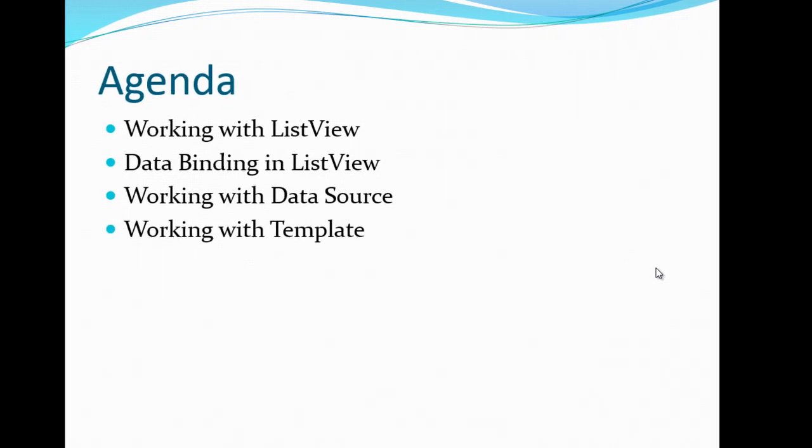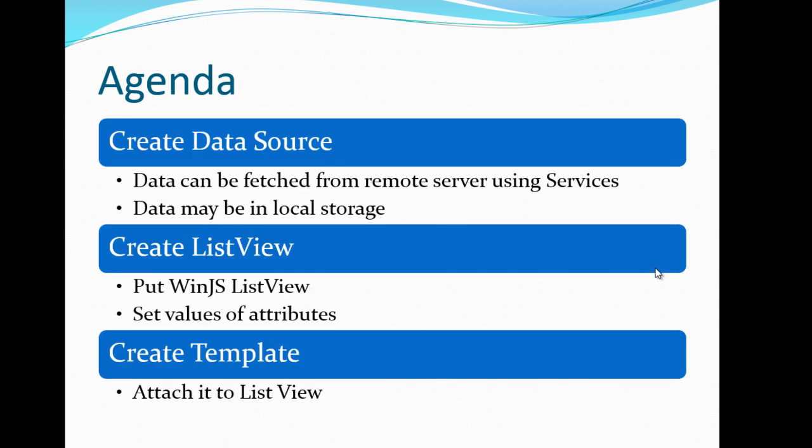ListView is a WinJS control which allows you to visualize or display your data in an application. While working with ListView there are three steps we need to follow. The first step is the data source — you need to create a data source. Before displaying data you need to know where your data is residing, whether you are fetching data from a remote server by consuming some services or you have your data in local storage.